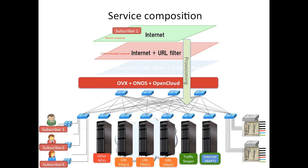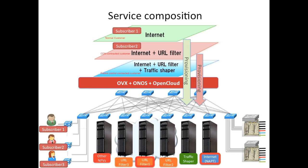Also from the GUI, we will assign internet plus URL filter service to subscriber2. This causes pushing proper flows, and now subscriber2 can access the internet via the URL filter service. Thirdly, we will show internet plus URL filter plus traffic shaper as the third service composition case. We assign this to subscriber3, which makes her able to access the internet but at slower speed. Let me show you the actual demo now.